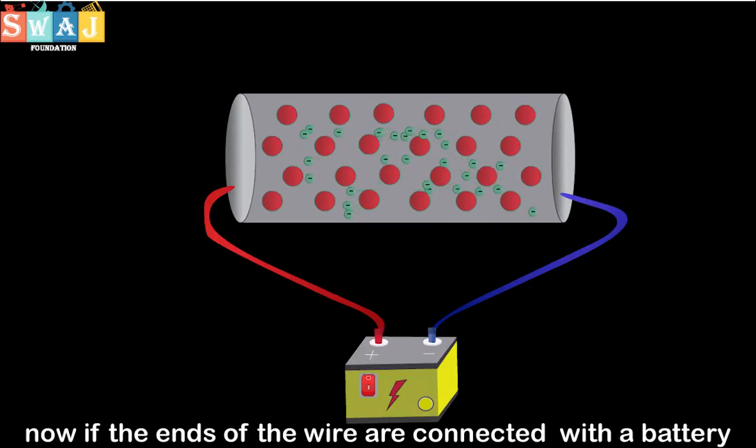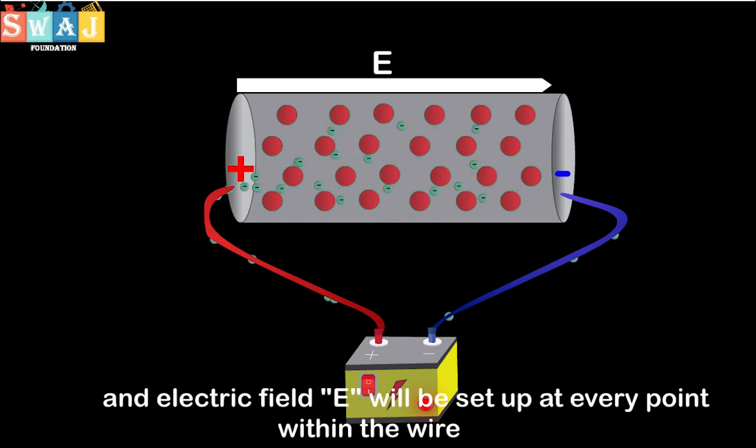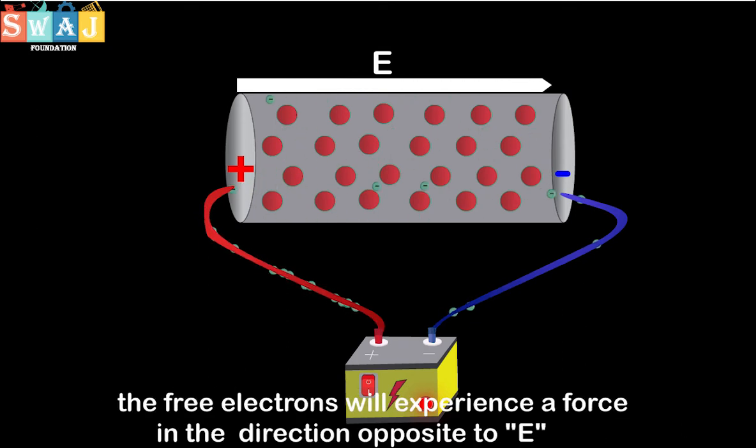Now, if the ends of the wire are connected to a battery, an electric field E will be set up at every point within the wire. The free electrons will experience a force in the direction opposite to E.